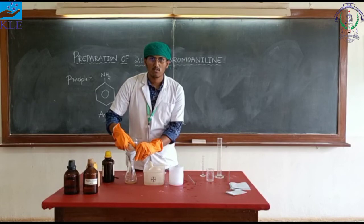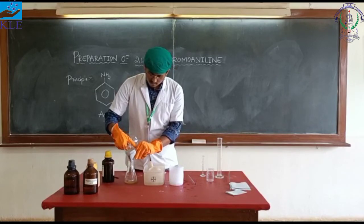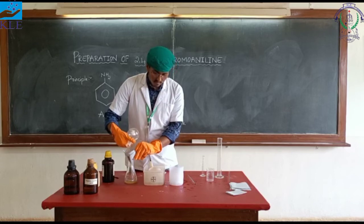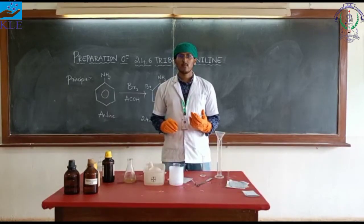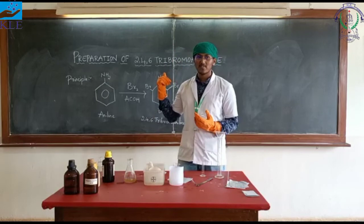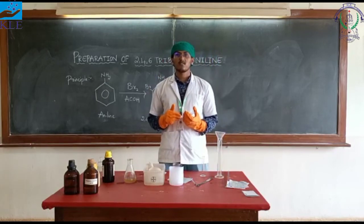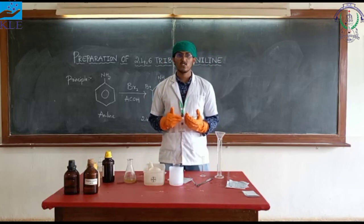The precipitate of 2,4,6-tribromoaniline is formed and now it is subjected to filtration. For filtration we are using a funnel and filter paper. The final product is 2,4,6-tribromoaniline, and its medicinal uses include organic synthesis and as a fire extinguishing agent.